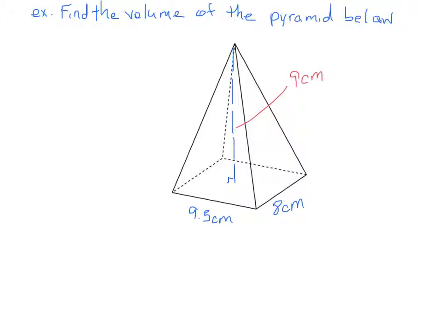Okay, so here is a pyramid and we need to find the volume of this pyramid. And we know from what we just learned that the volume of a pyramid is always going to be equal to one-third the base area times the height.